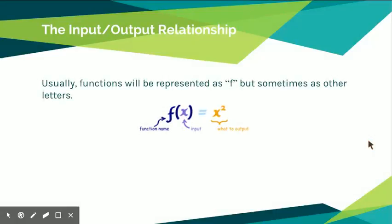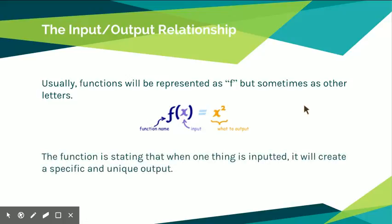Functions are usually represented as f, but they can be other letters too. The only letters you won't typically see used are x or y, because that would be confusing with the coordinate plane. An important thing to note: x is our input, and f is the function name. Whatever you put in place of x creates a specific and unique output.